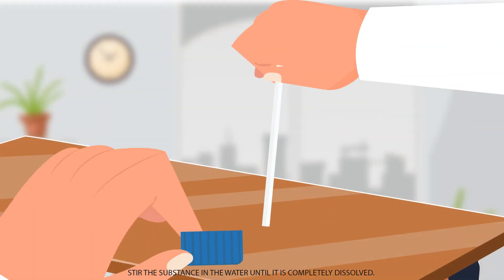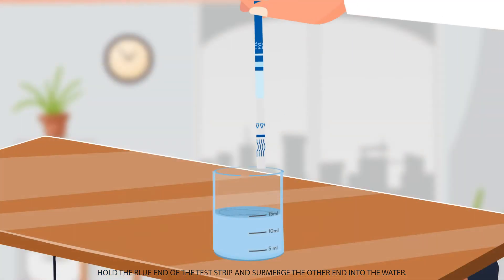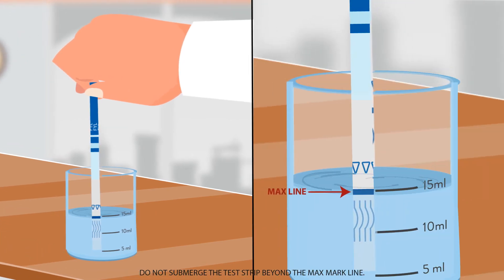Step 2. Stir the substance in the water until it is completely dissolved. Step 3. Hold the blue end of the test strip and submerge the other end into the water. Do not submerge the test strip beyond the max mark line.